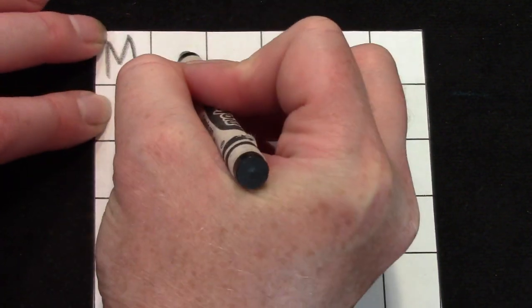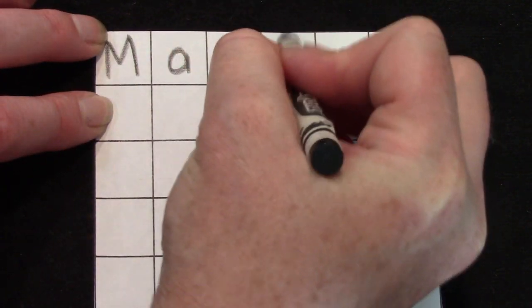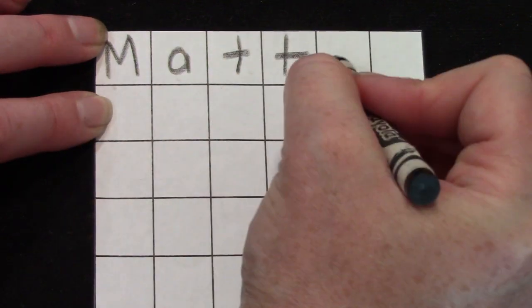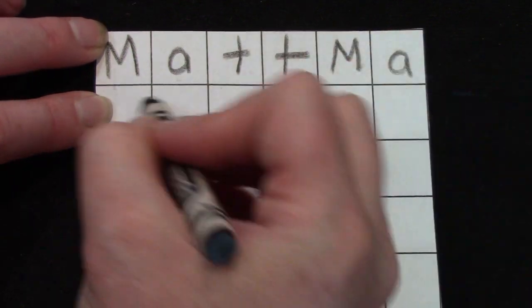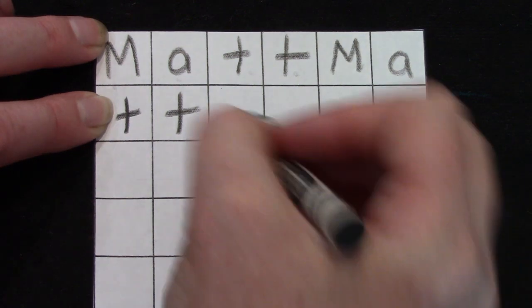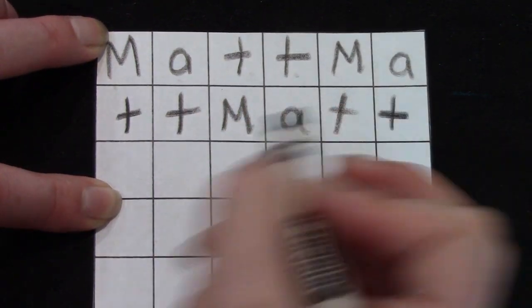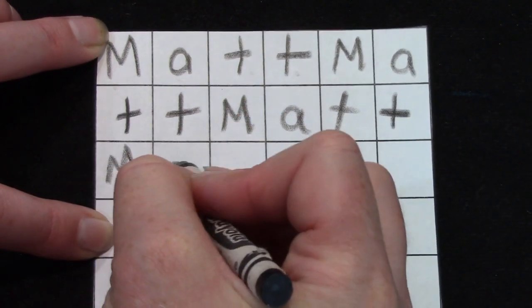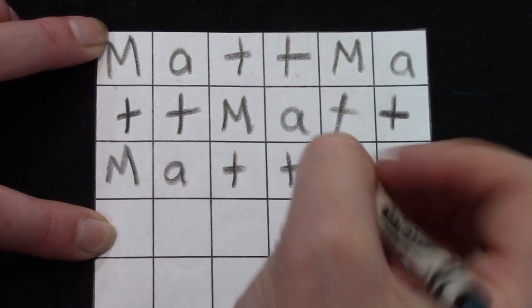Now I'm actually going to write my son's name, Matt. M-A-T-T. M-A-T-T. M-A-T-T. And I'm going to write it over and over again on my grid.